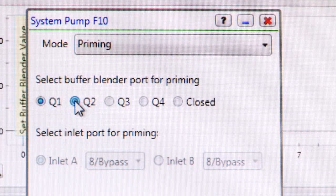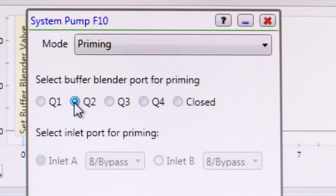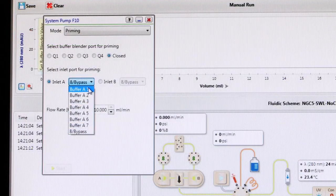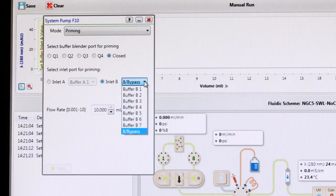Repeat these steps for the other buffer blending ports, Q2 to Q4, as shown. The buffer inlet valves may now be primed by selecting Closed in the faceplate. You may select the positions to be primed through the pump A or B manifold.